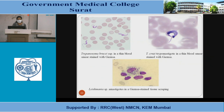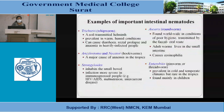Trypanosoma brucei species in the thin blood smear stained with Giemsa. The second figure shows Trypanosoma brucei in the thin blood smear. And here, Leishmania species amastigotes in the Giemsa stain.